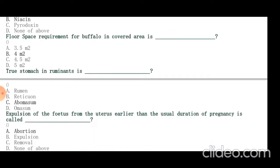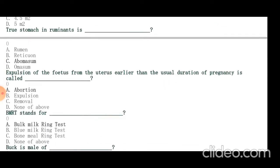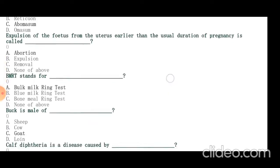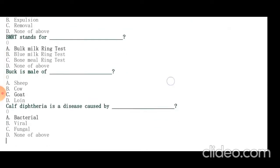Expulsion of fetus from uterus earlier than the usual duration of pregnancy is called abortion. BMRT stands for bulk milk ring test for brucellosis. Buck is a male goat. Calf diphtheria is a disease caused by bacteria.